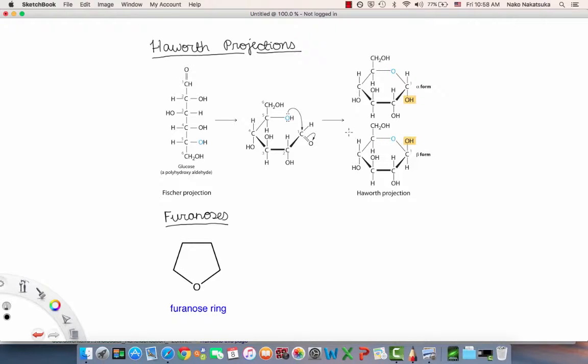in their cyclic form after this particular Fisher projection is folded and you create this acetal bond to create the alpha form and the beta form.